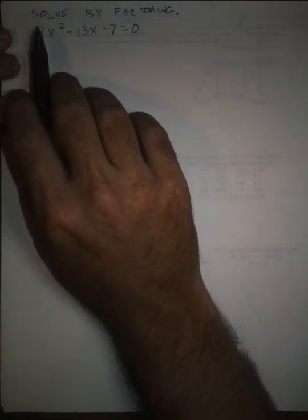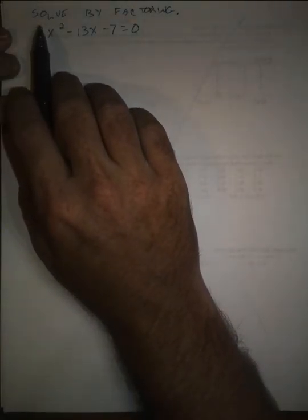A couple of folks have asked questions about factoring quadratics using what I've called the AC method, so I just want to show that to you. Here's a question that requires factoring by grouping with the AC method.